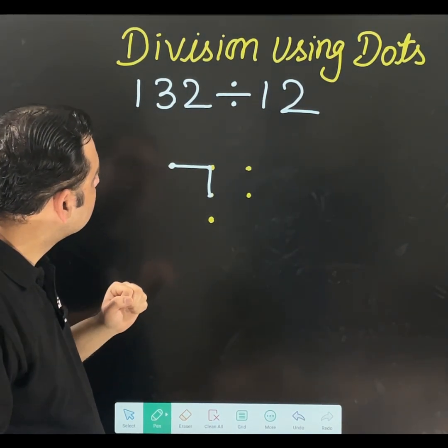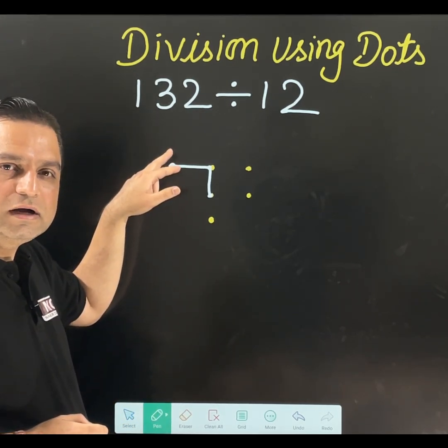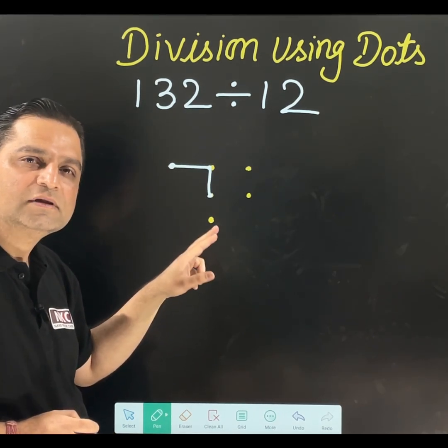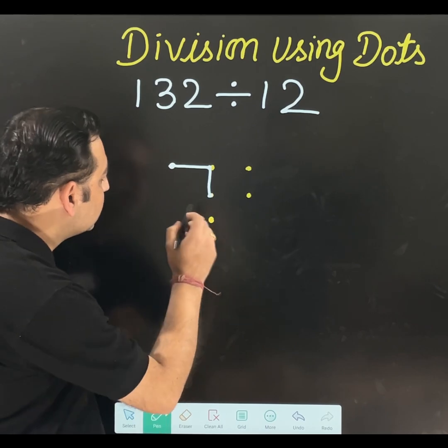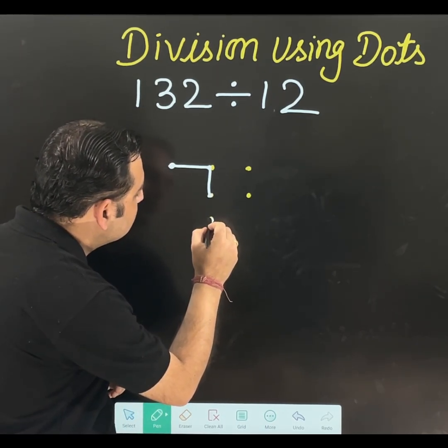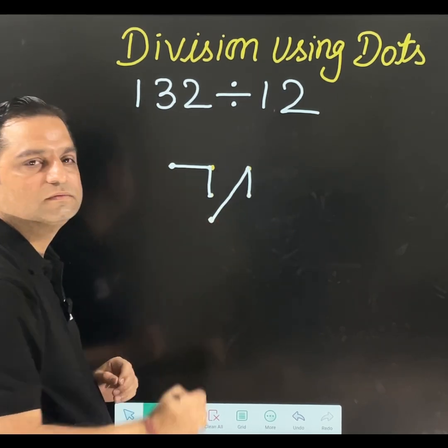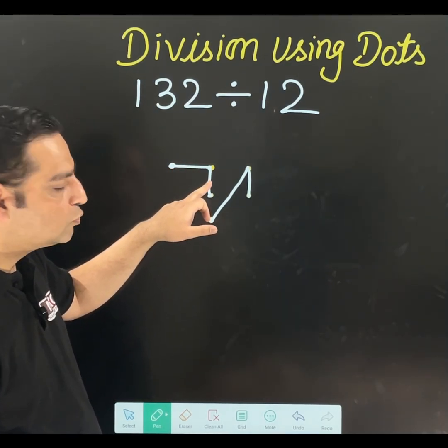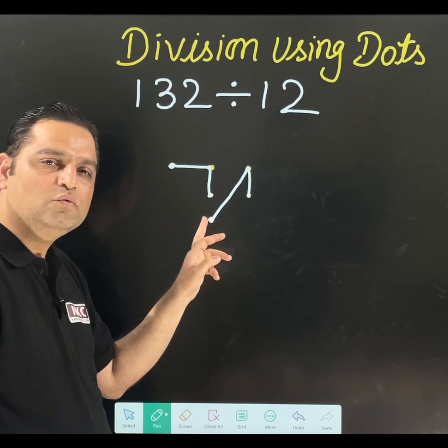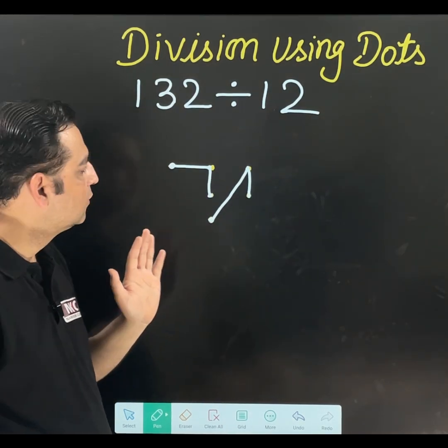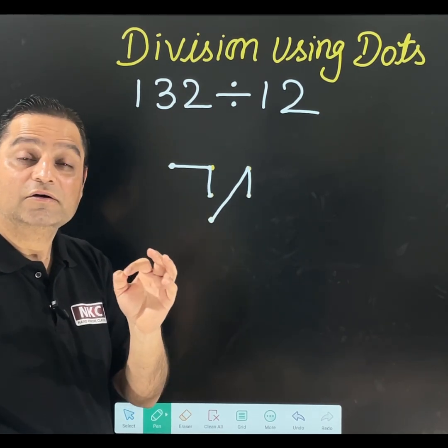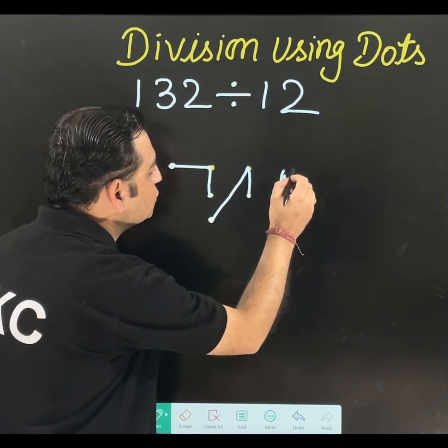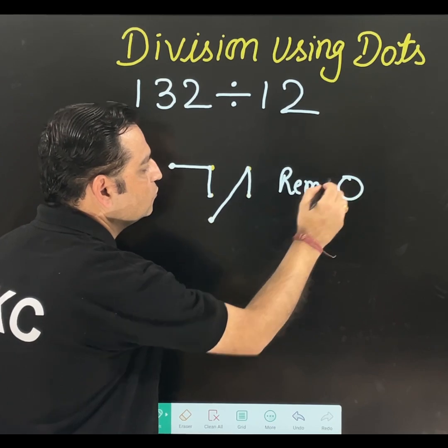We need to divide it by 12. 12 means 1 and 2, combination of 1 and 2. So what I will do, I will start from here. 1 and 2 means I am taking 1 this dot and taking 2 these dots, joining them. It means I have formed 12. This is the first step to be done.